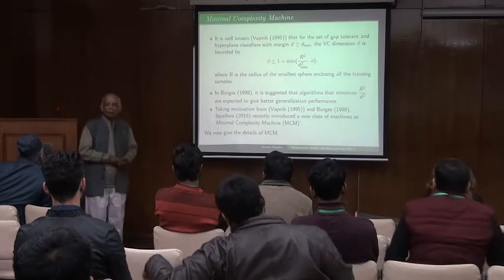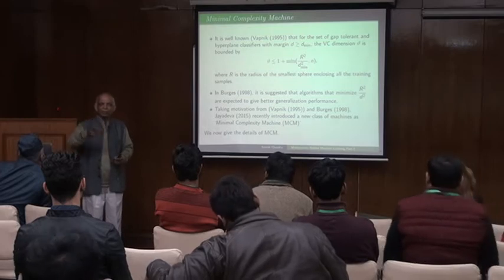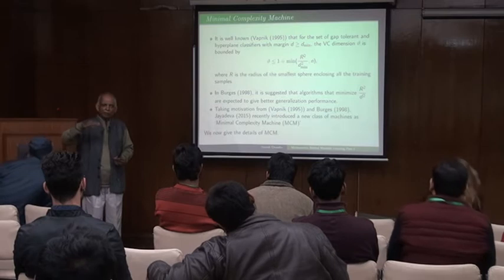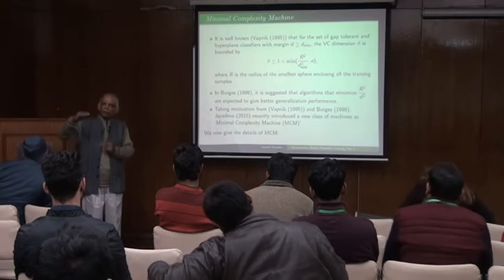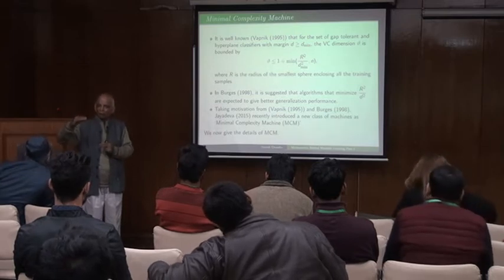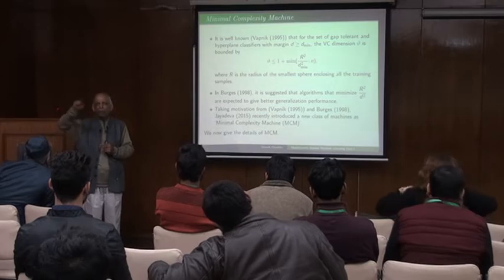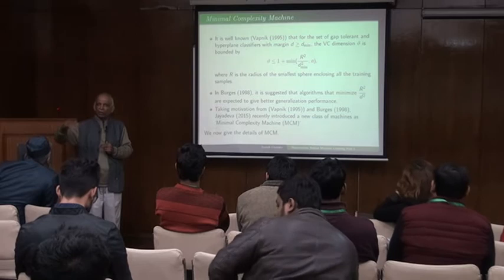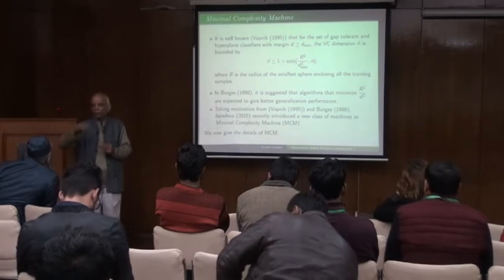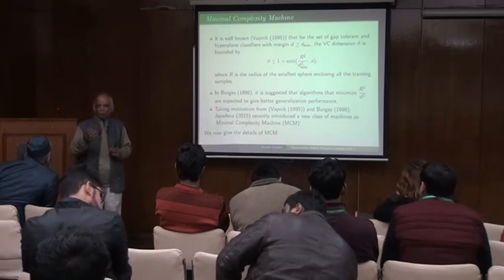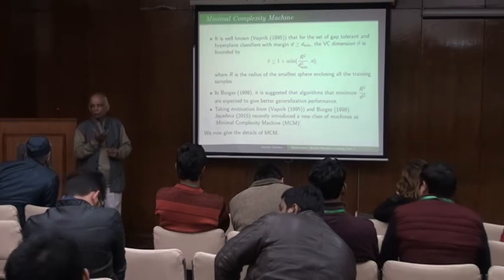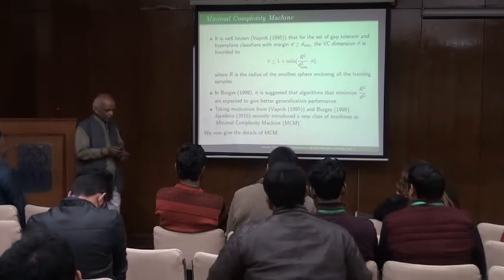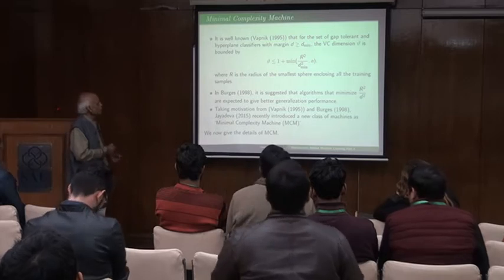What is called the gap-tolerant hyperplane is the following. Given a data set, you consider the sphere, and then you take two parallel planes. All those points which are between the upper plane and the sphere — they are the positive class — and which are between the lower plane and the sphere — they are the negative class. So this is based on the support vector machine, but slightly different. And what he called the gap-tolerant hyperplane classifiers.